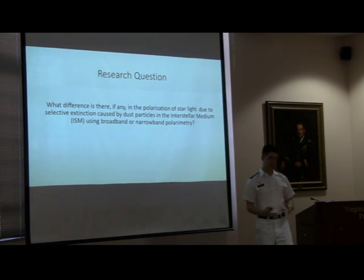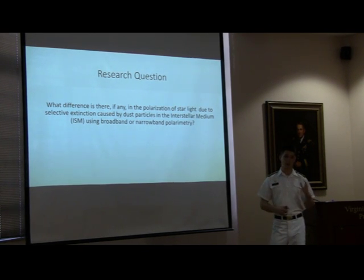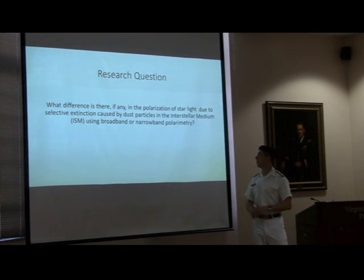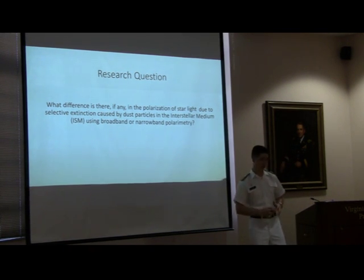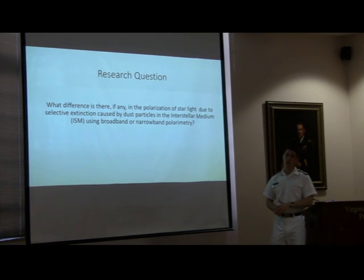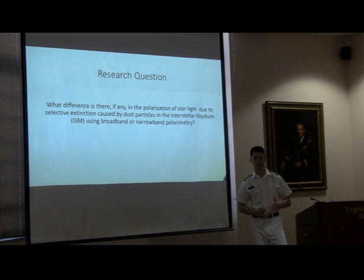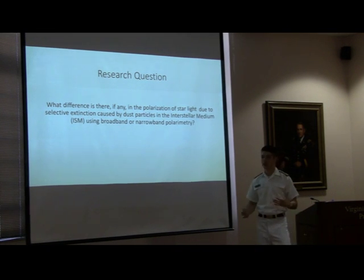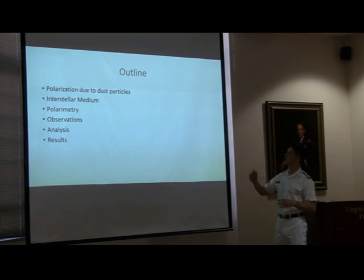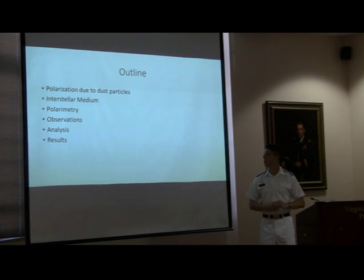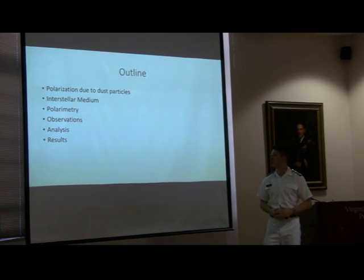I'm essentially repeating both of these projects in that I'm going to be looking at a cluster without nebulosity and one with. My research question is: what is the difference, if any, in the polarization of starlight due to the selective extinction caused by dust particles in the interstellar medium using broadband or narrowband polarimetry? One aim I have in this presentation is to describe these things so you can understand what's going on. We're going to go over what polarization is due to these dust particles, what the interstellar medium is, what polarimetry is, and then we can go into my observations, analysis, and results.